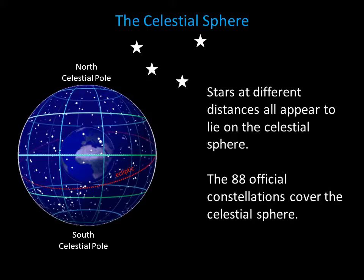Of course, we know that Earth really isn't enclosed in a plastic sphere. In reality, the stars are at all different distances. Nevertheless, the celestial sphere is a useful model to begin thinking about the mechanics of the sky.